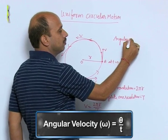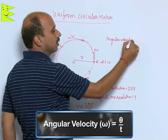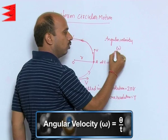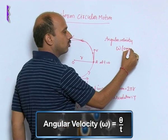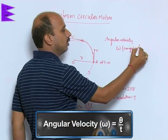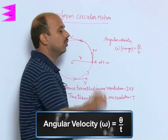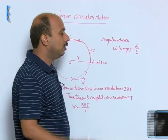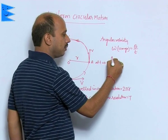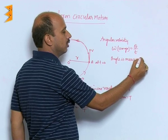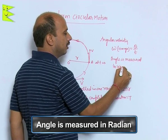Angular velocity is represented by this symbol, pronounced as omega, is equal to theta by t. Angle upon time is angular velocity. Here we measure angle, angle is measured in radian.